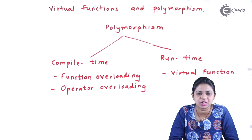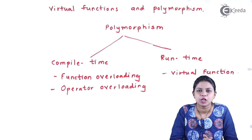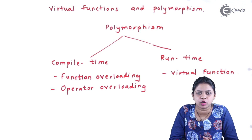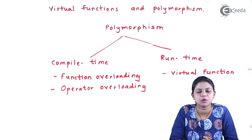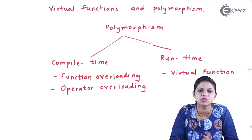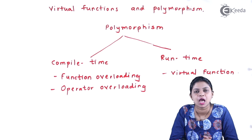In this video we will discuss how polymorphism is implemented with the help of programs. Polymorphism comes in two types: number one is called compile time polymorphism and number two is called runtime polymorphism.